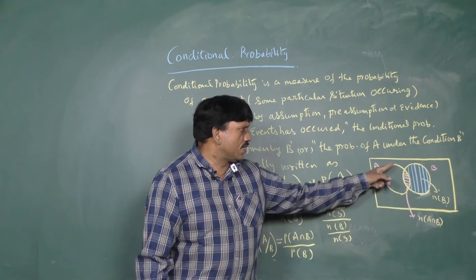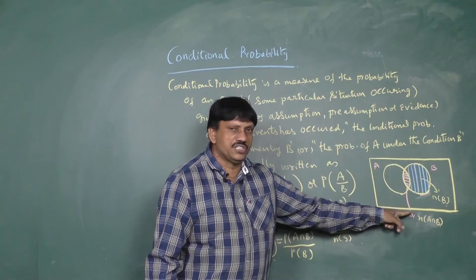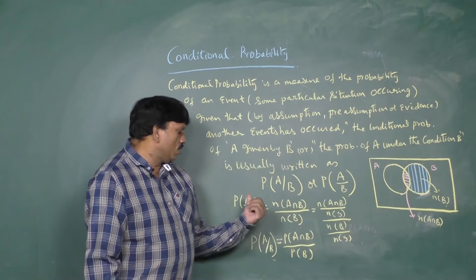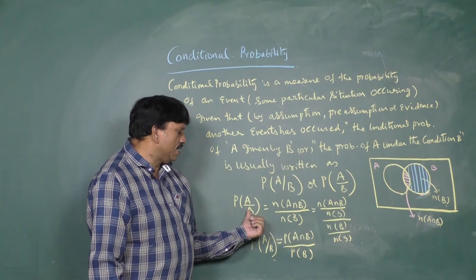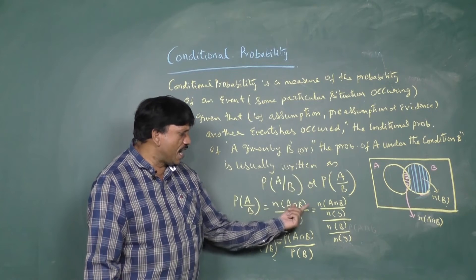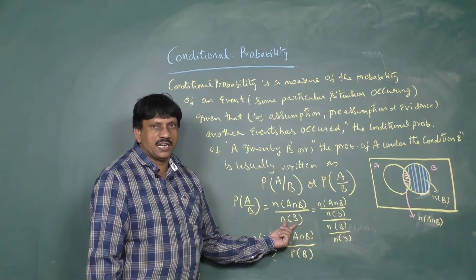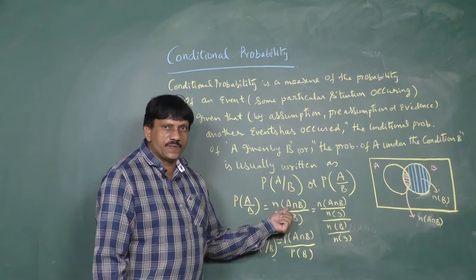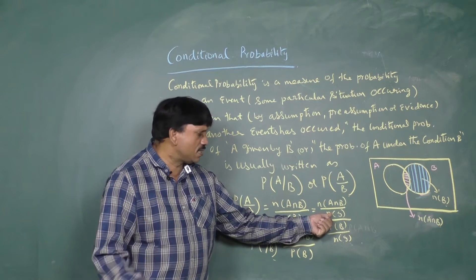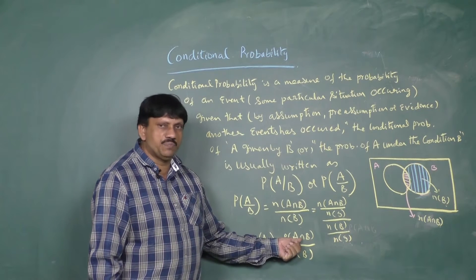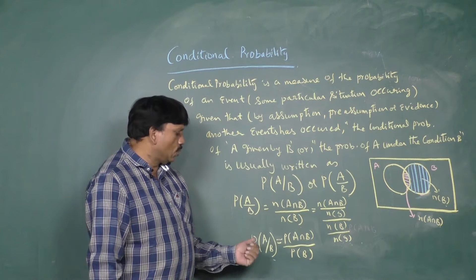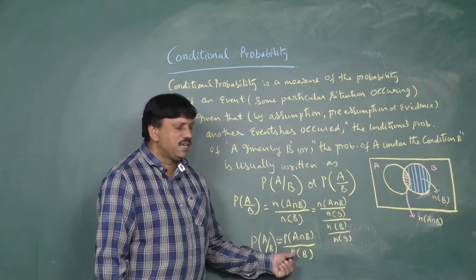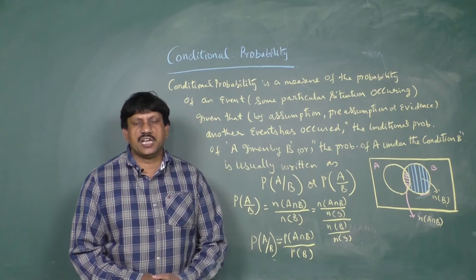Look here: set A, set B — their common point of intersection is A intersection B, that is N of A intersection B, and the number of elements in B is N of B. The probability of A under condition B is nothing but N of A intersection B divided by N of B. If you divide numerator and denominator by N of S (total sample space), this turns to P of A intersection B divided by P of B. So the conditional probability P(A|B) = P(A∩B) / P(B).